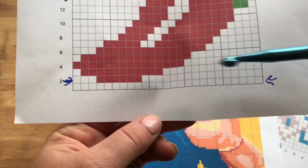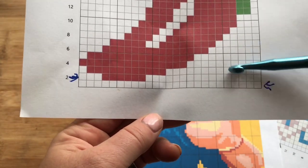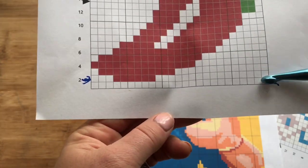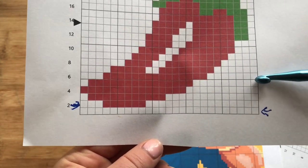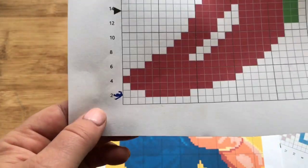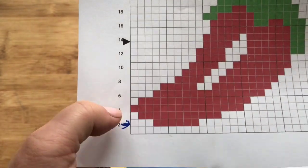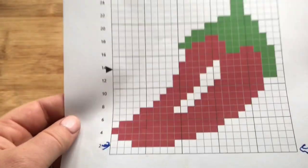When you work your first row, you want to make a little arrow down by the side so you can see the direction that you're going. It helps you keep track of your rows, and each line of the graph is a row.